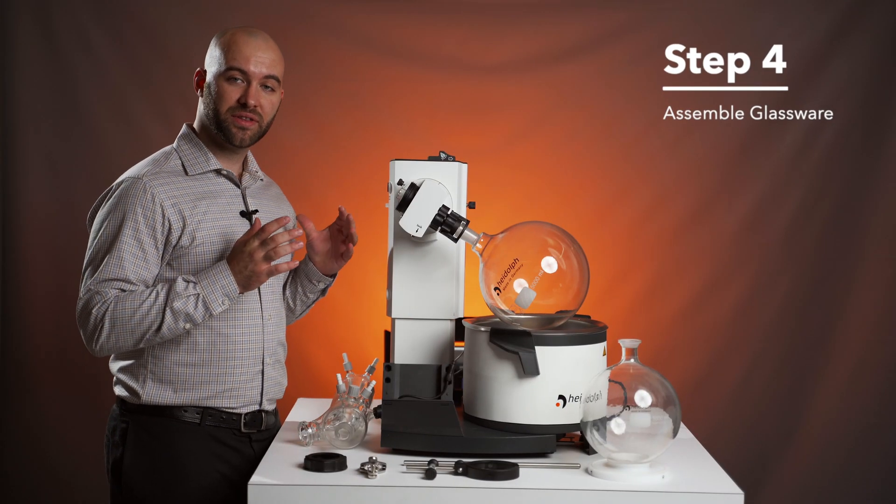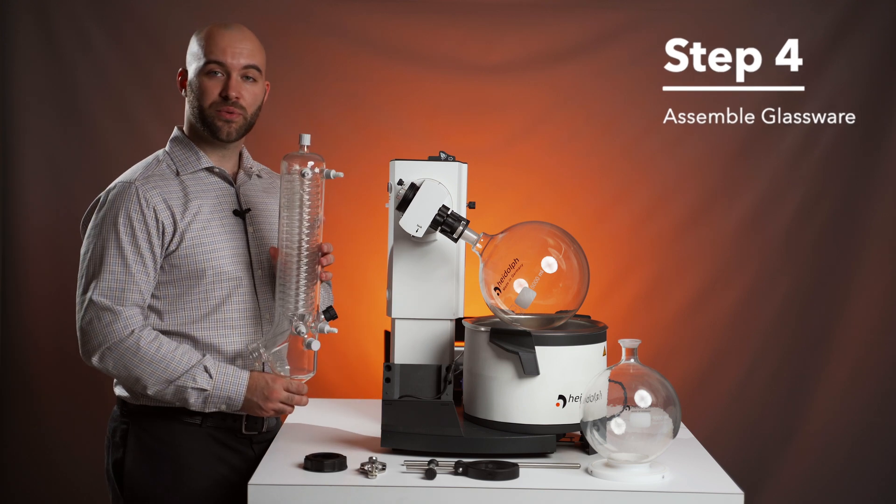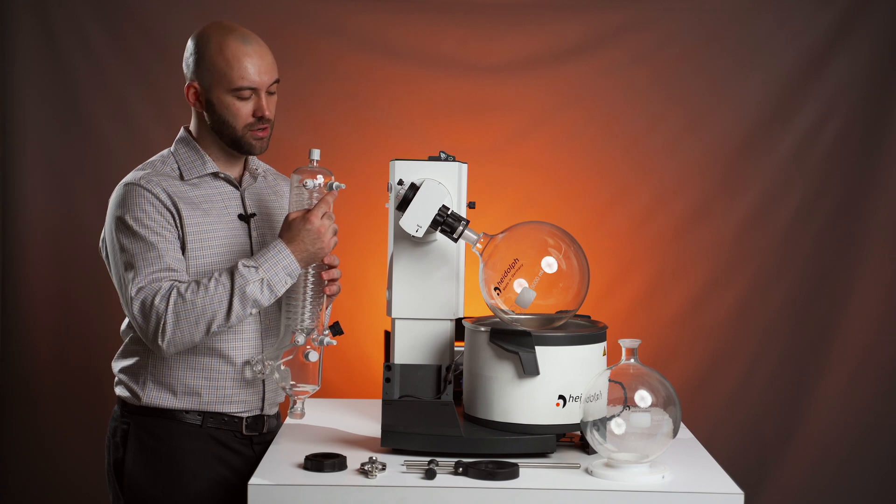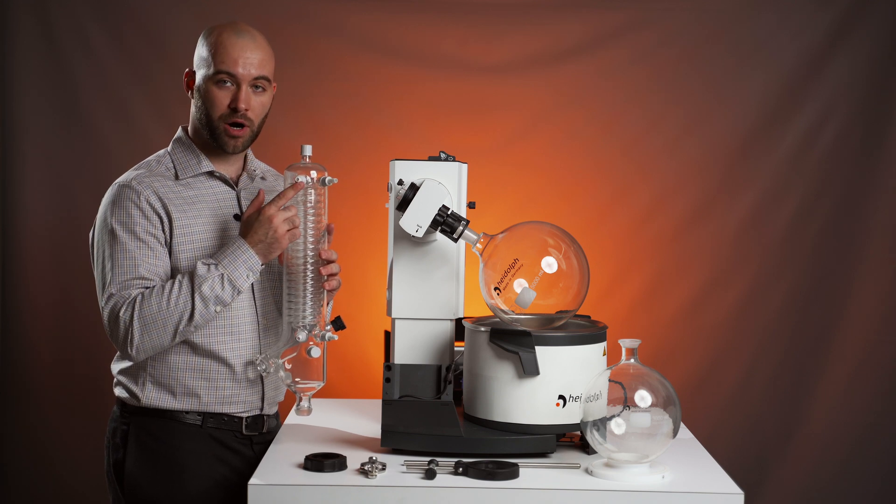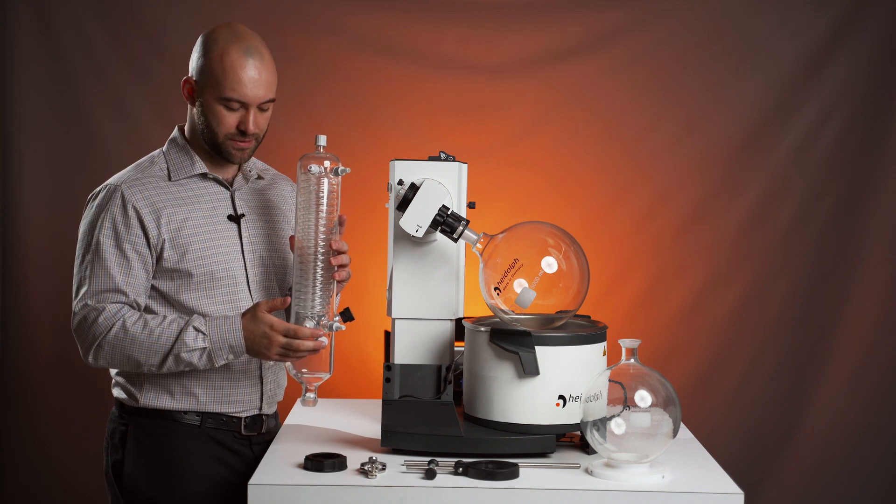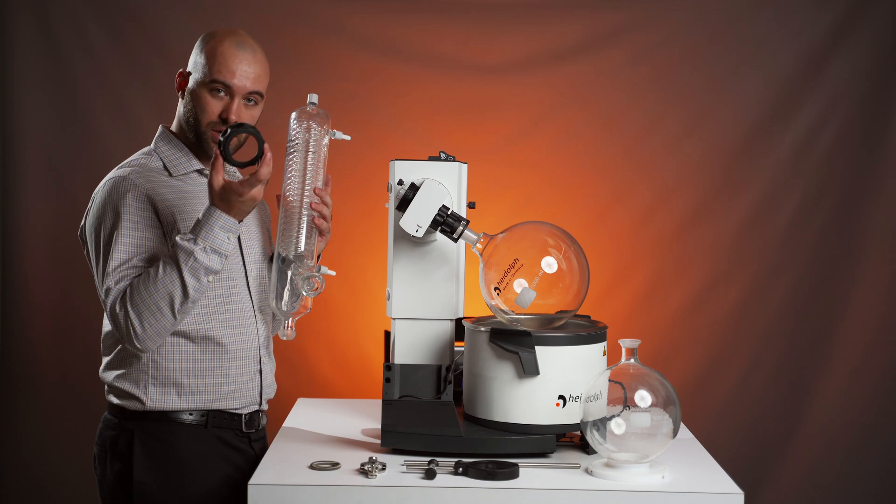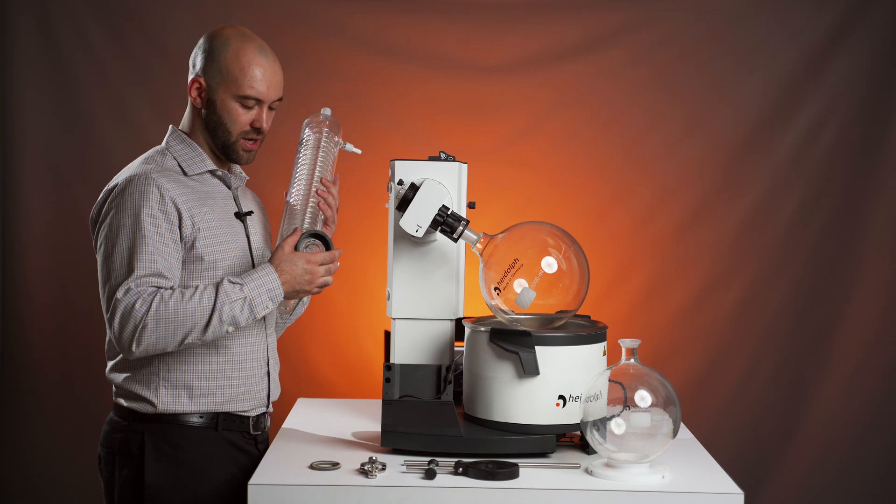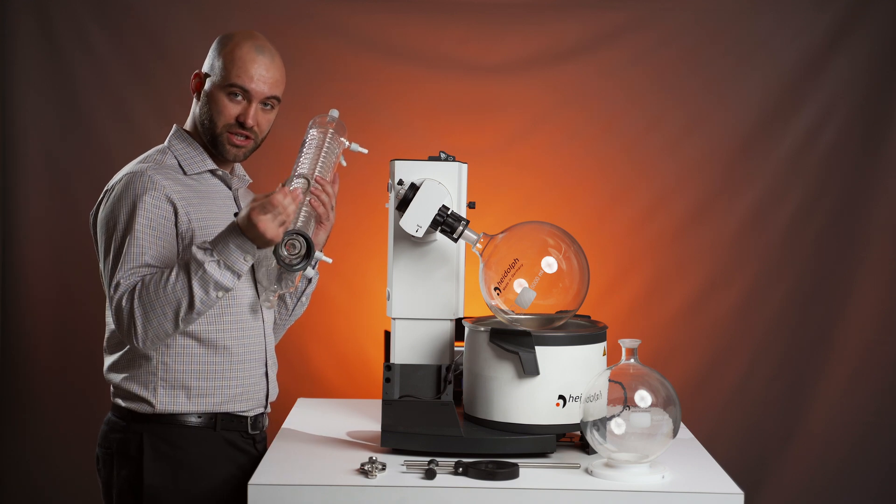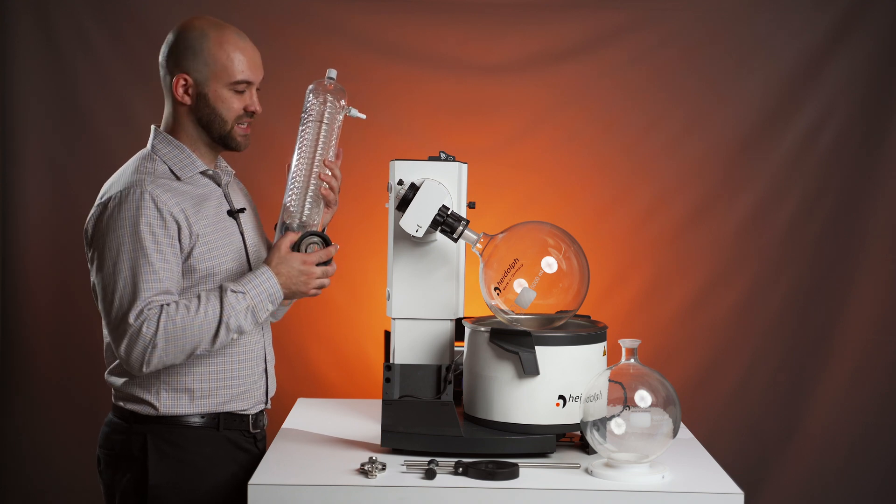Step four, we will be assembling the glassware on our HiVap. We will start with our G3 XL condenser. From the box, you're going to want to make sure you have attached four GL-14s with barbed connectors and two GL-18 caps. Once that is done, you will take that screwing clamp that we removed in the last step and slide it over this connection. Following that, the tension spring that was included will go around to prevent it from sliding off.